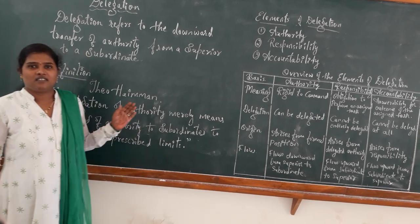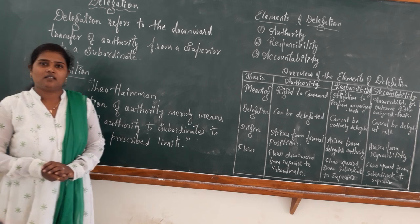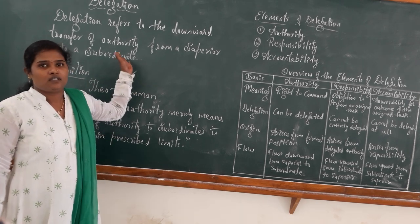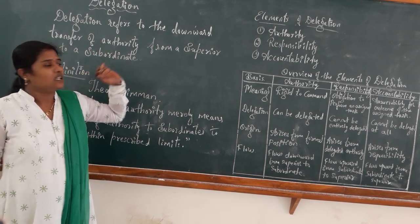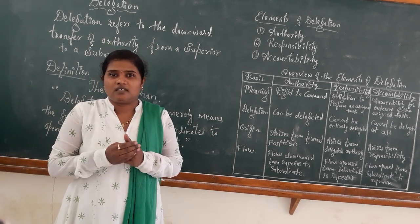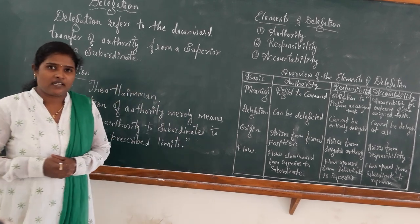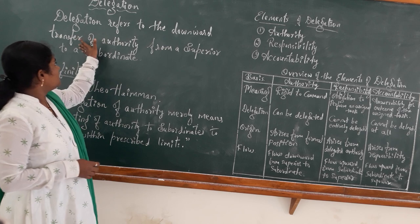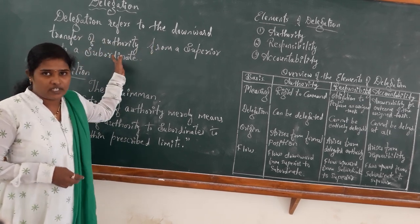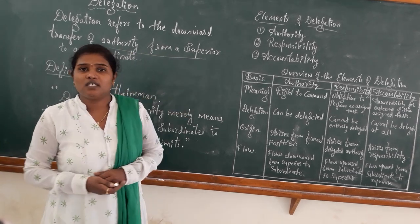Hi friends, this is the business study fifth chapter — that is organizing — and in that, one of the topics is called delegation. Today we are going to discuss about delegation. Delegation is nothing but the right to command. In simple words, delegation refers to the downward transfer of authority from a superior to a subordinate.